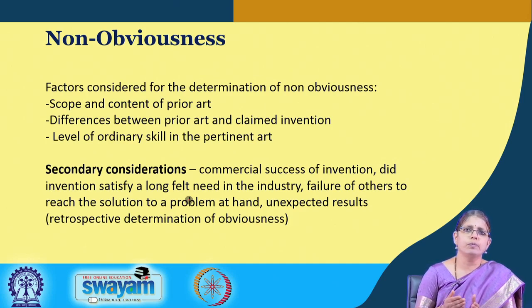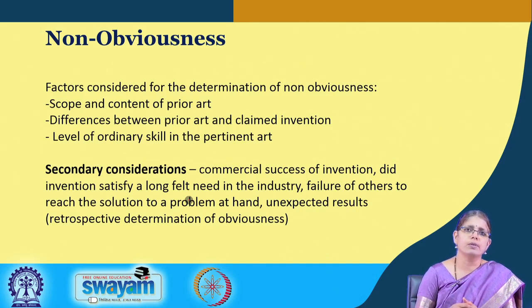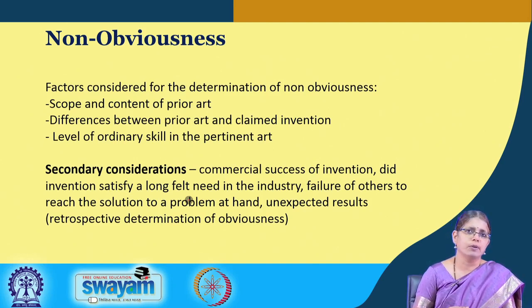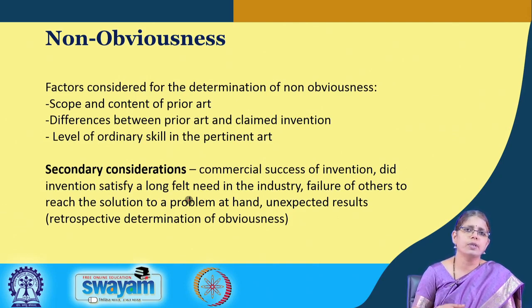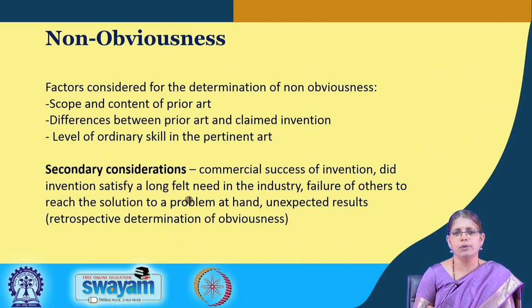As we move into complex arts — today we are in the area of multidisciplinary and transdisciplinary technologies — the level of skill in the art has become more like that of a peer reviewer. In the areas of nanotechnology, and today in artificial intelligence, ordinary skill would not be sufficient. Therefore this subjective inquiry must be looked at from the point of view of the skill of the person assessing the document for purposes of non-obviousness.